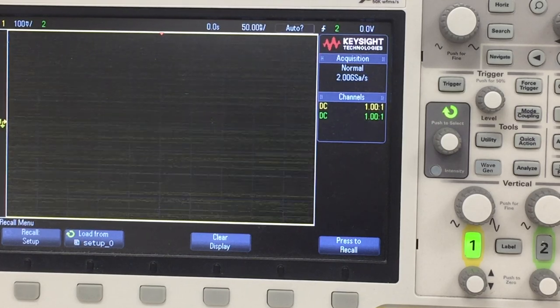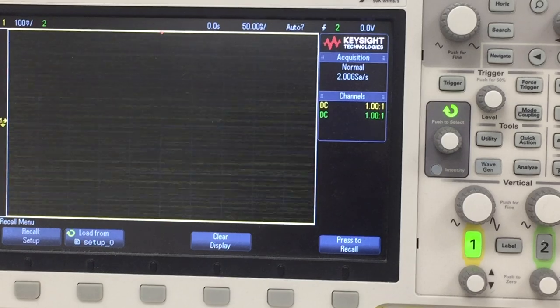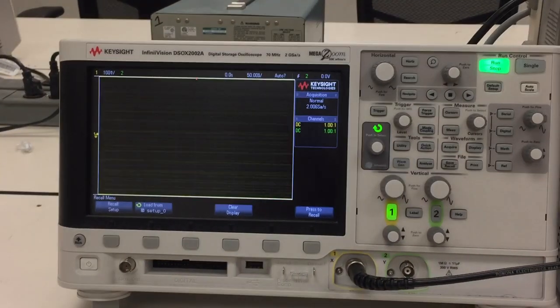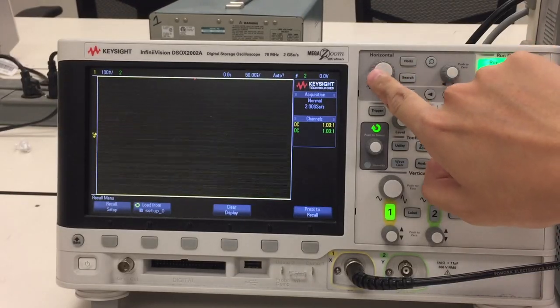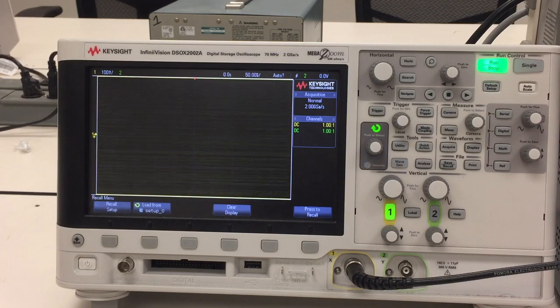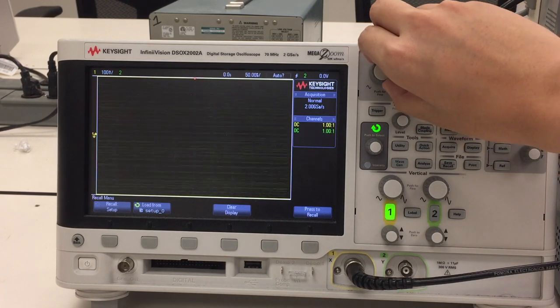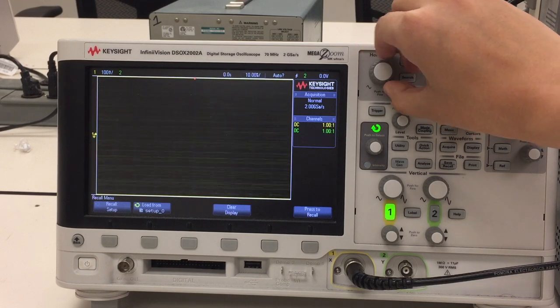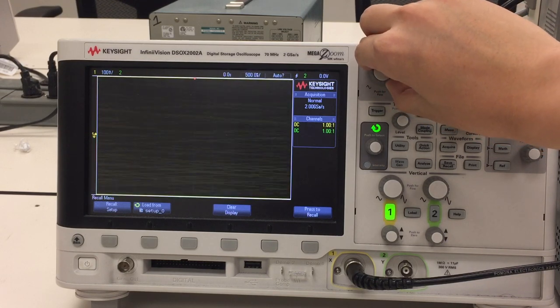So what we're going to do is we're going to adjust the horizontal resolution of the oscilloscope to the extent that we zoom out to the extent that we can visualize that 1 ms. So let's do that.